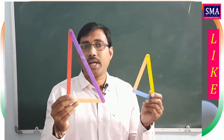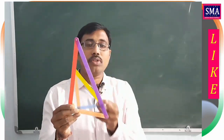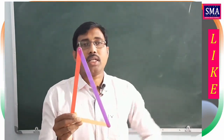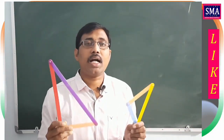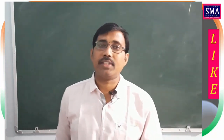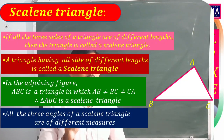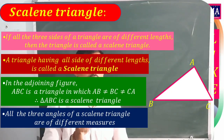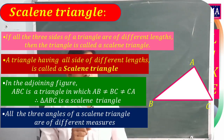Observe two more triangles — both have three sides of different lengths shown in blue, red, pink, and orange colors. A triangle that has three sides of different lengths is called a scalene triangle. In any scalene triangle, AB ≠ BC ≠ CA. Also, in any scalene triangle, the three angles are all different from each other.